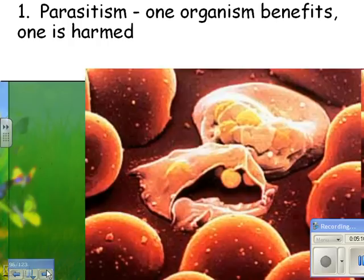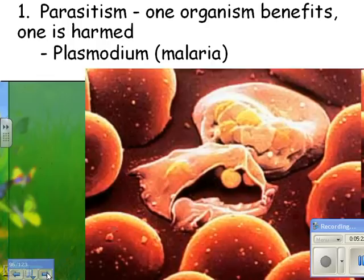One type is parasitism, where one organism benefits and the other is harmed. For example, these are red blood cells infected with the parasite that causes malaria — the parasite benefits while the host is harmed. This is a plus-minus relationship.